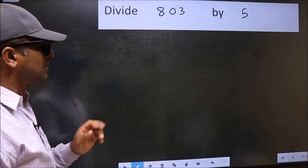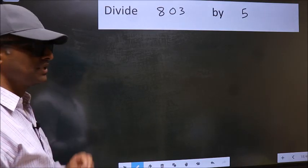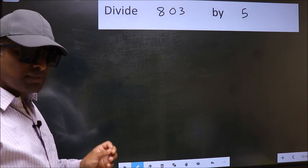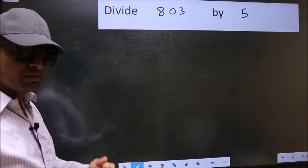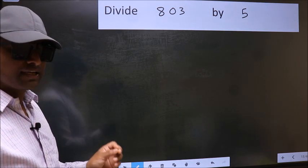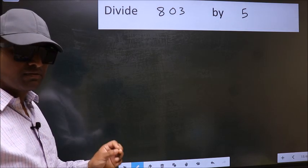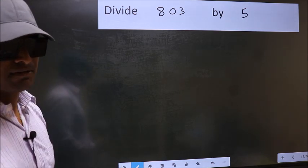Divide 803 by 5. While doing this division, many do this mistake. What is the mistake that they do? I will let you know. But before that, we should frame it in this way.